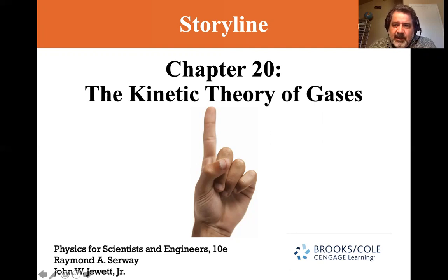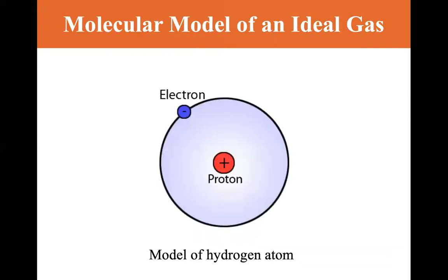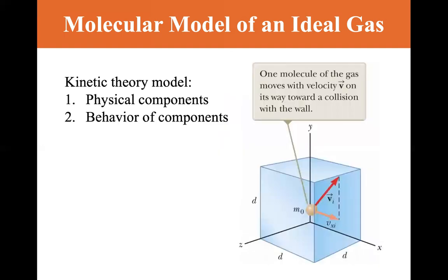We start with section 20.1, the molecular model of an ideal gas. We begin with a simplified model of the hydrogen atom — an electron orbiting a proton. We now know from quantum mechanics there's a probability cloud defining where the electron might be found. For the kinetic theory model, the physical components are simply that the gas consists of a number of identical molecules within a cubic container of side length d — you can see the d on all three sides.